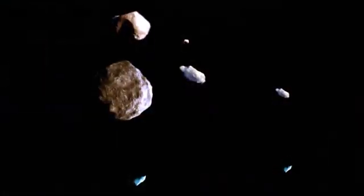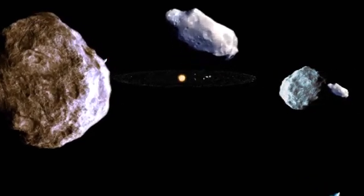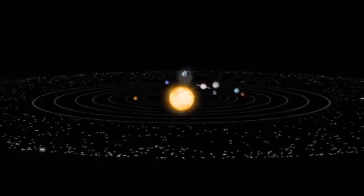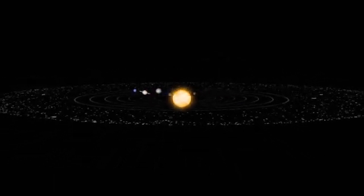Comets are icy objects typically ranging a few miles in size, which orbit our sun. Their highly elliptical orbits carry them from close to the sun all the way to the outer edges of the solar system.